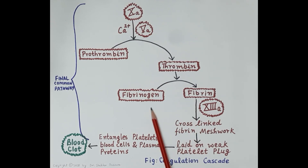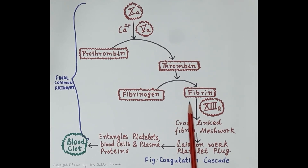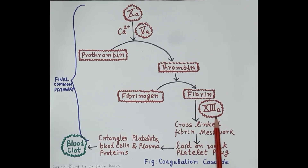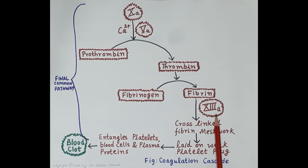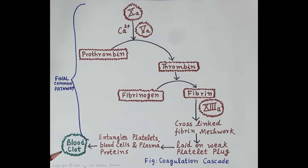Thrombin in turn activates fibrinogen to fibrin. Fibrinogen — clotting factor 1 — is a soluble protein, while fibrin is an insoluble protein. Large numbers of fibrin monomers are produced and join together to form fibrin threads. Activated clotting factor 13a then cross-links these fibrin threads, forming a fibrin mesh network at the site of injury. This fibrin mesh network is laid over the platelet plug, strengthening it. Platelets, blood cells, and plasma proteins are all entangled in this fibrin mesh network, finally producing a blood clot that seals the injured site and controls bleeding.